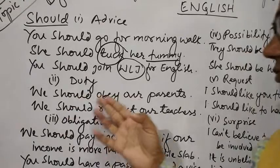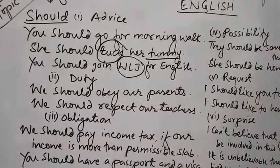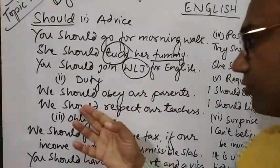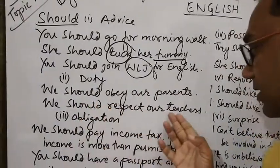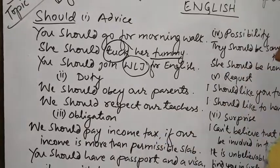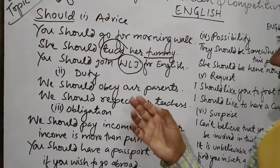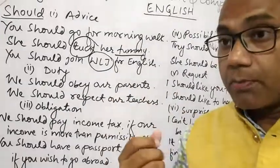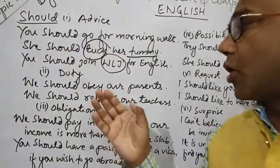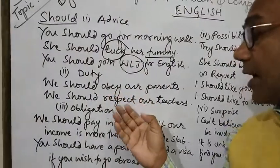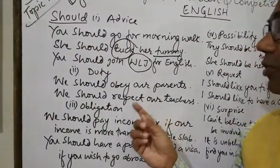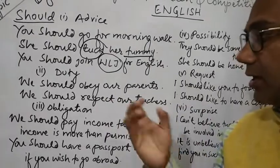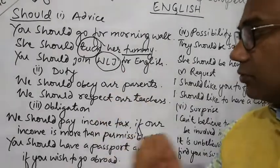The second use is Duty. For example: 'We should obey our parents.' Hame apne mata-pita ki aagya ka palan karna chahiye. 'We should respect our teachers.' Hame apne teachers ka aadar karna chahiye. In spoken English we use 'should,' but in written English we use 'ought to.' For grammatical purposes, 'ought to' is more formal compared to 'should.'